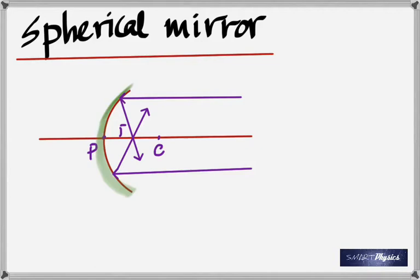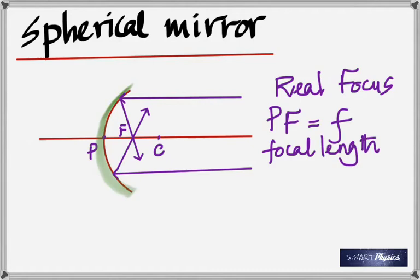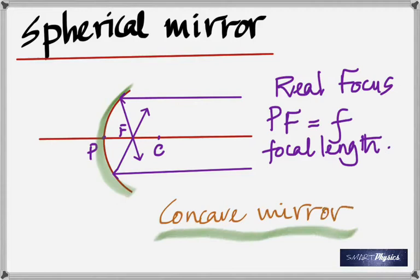The distance PF is called the focal length. All distances are measured from the pole. PC is the radius of curvature. The radius equals two times the focal length. Write that down: radius is twice the focal length. So in a problem, if the radius is given, you always work with the focal length — take half of that.